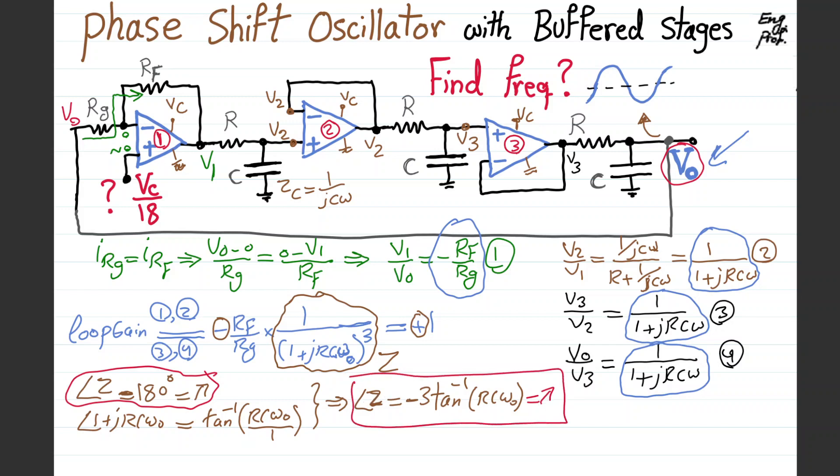What is the consequence of this? Negative and positive pi is the same thing. Setting this to negative pi means tangent inverse of RC omega is pi over 3. From this, we get RC omega naught equals root 3, square root of 3. That's the most important thing because this effectively tells us that omega naught is square root of 3 divided by RC. So we found the frequency.